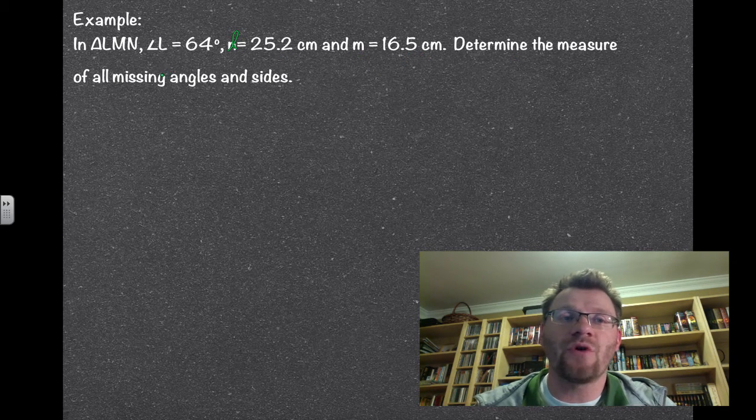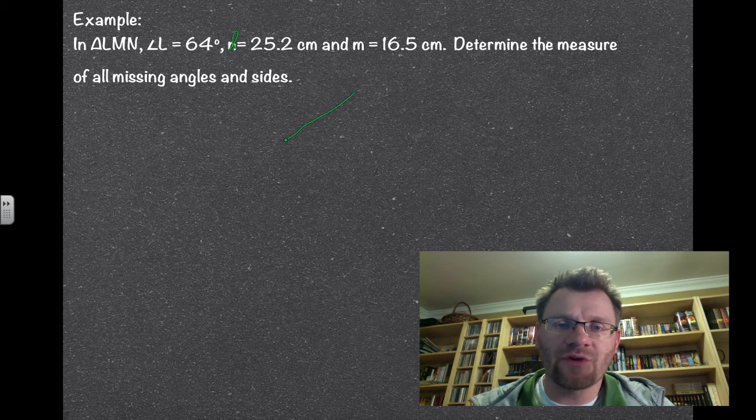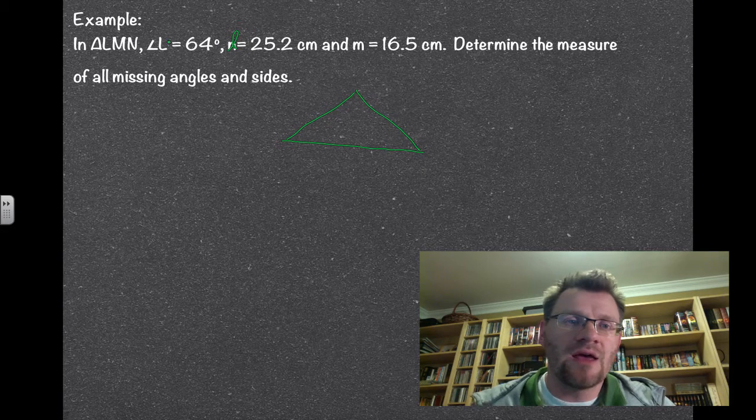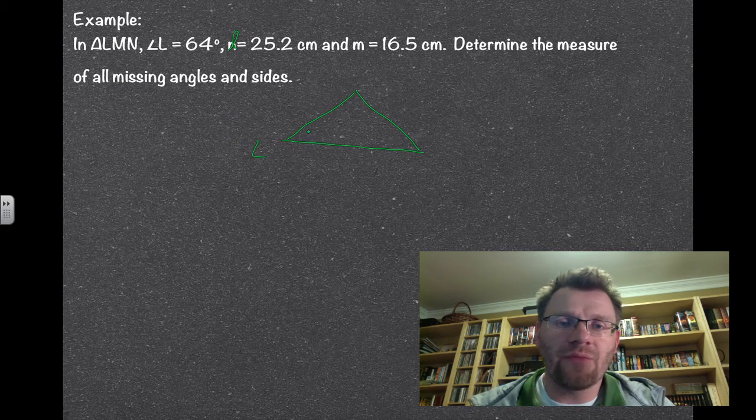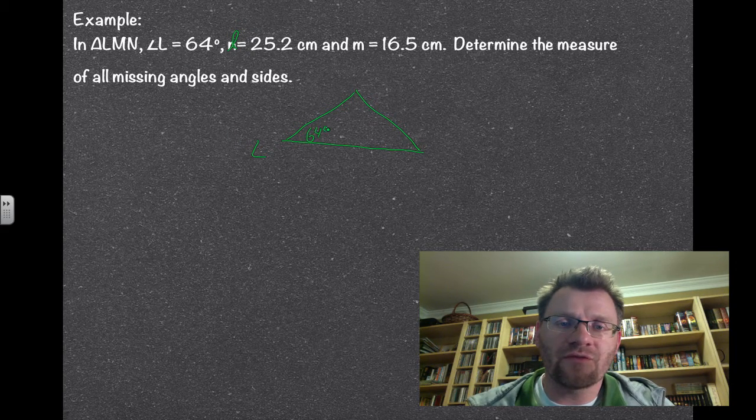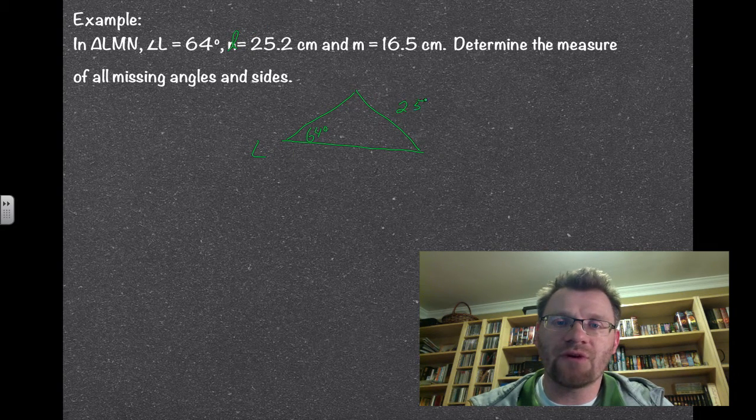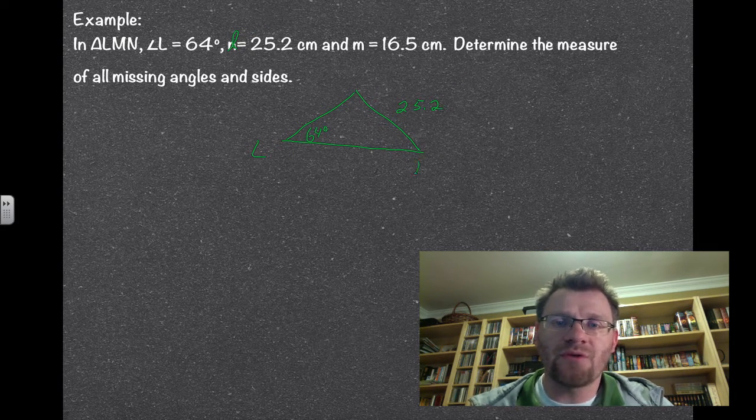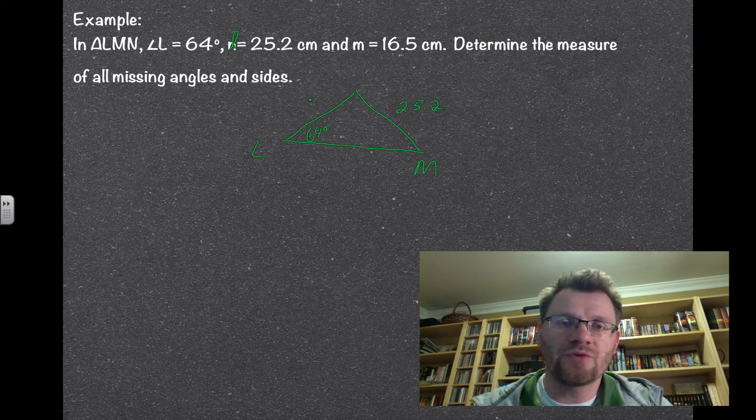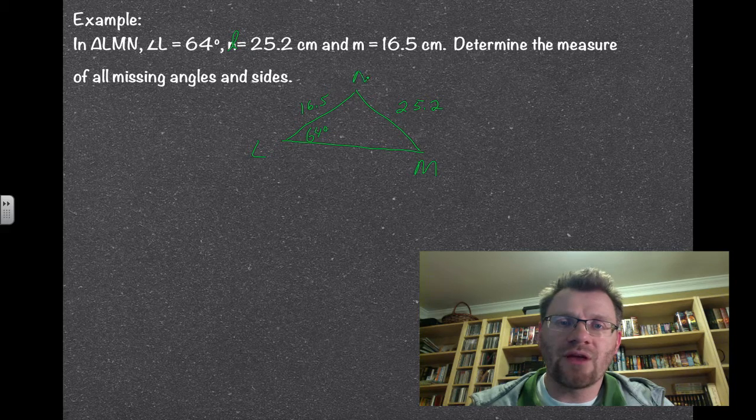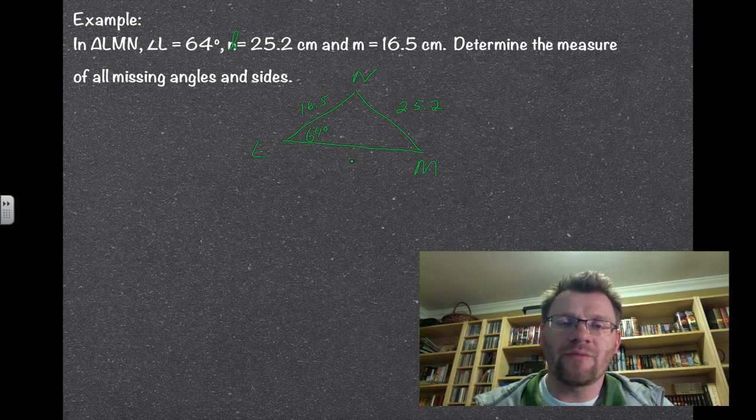We're going to start by drawing a triangle, it doesn't have to be drawn to scale. Angle l, I'm going to put in the bottom left here and call that 64 degrees. Side l is always opposite it, so that's 25.2. I'm going to call this angle m, which makes this side m, which is 16.5. I'm going to call this angle n, and I don't know the opposite side there.